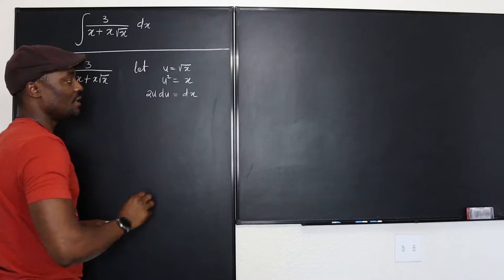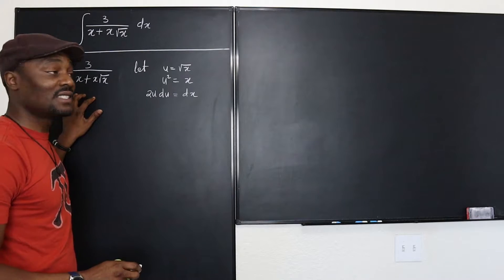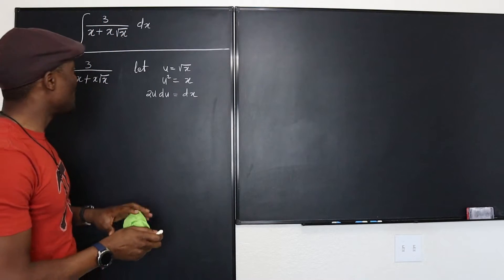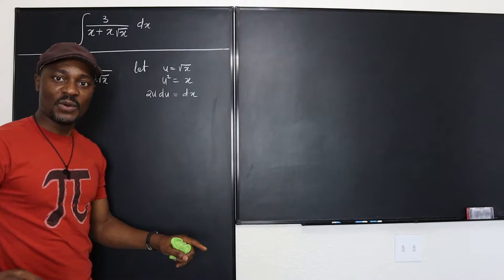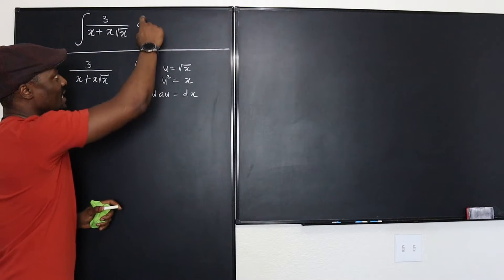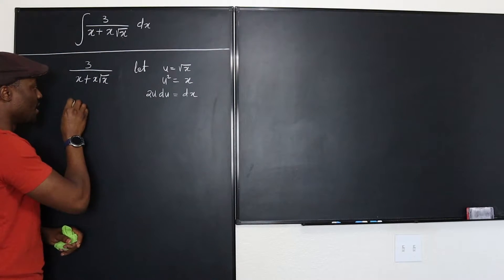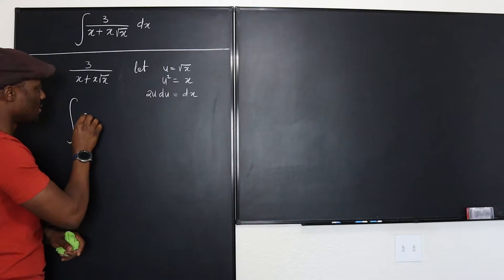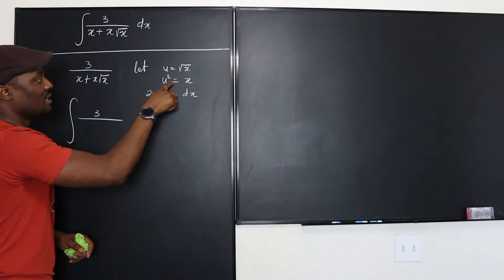So now I can go here and replace this in this function. So that this integral - see what's going to happen? Now the square root is gone. I can go back and replace dx with 2u du. This integral becomes the integral of 3 over x is u squared.